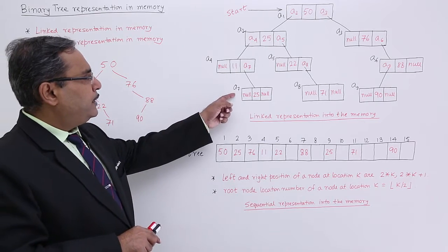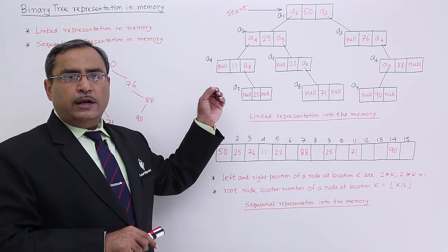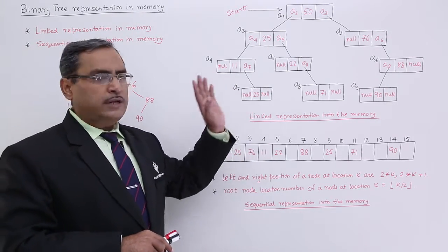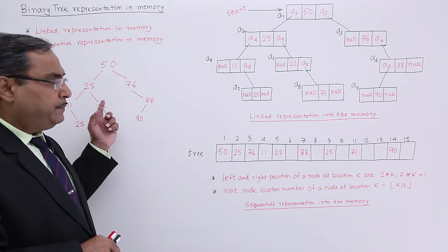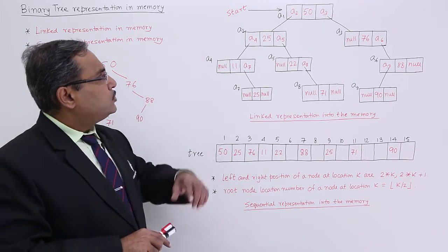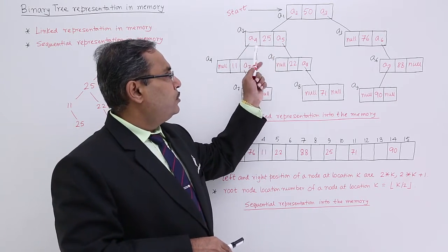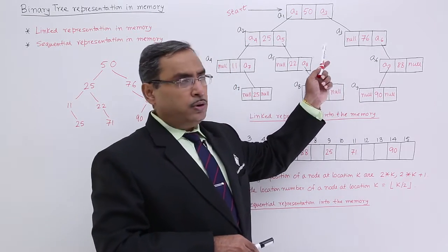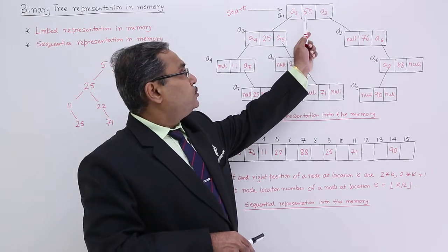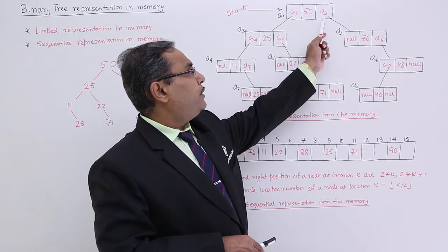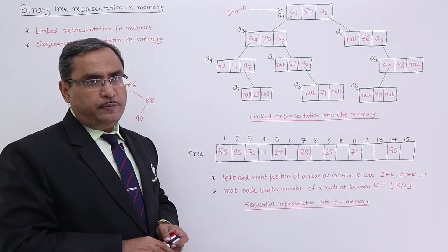Here I have written the node addresses as a1, a2, a3 — 'a' stands for address. Node 50 is having the left child 25 and the right child 76. The left child 25 is in a separate node and the right child 76 is in a separate node. This node has the address a2 and this node has the address a3. So here in the left link, I am having a2, and in the right link, I am having a3. In this way, this particular structure has been built.